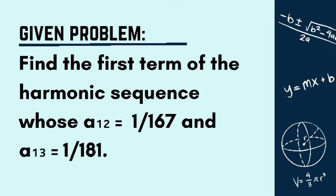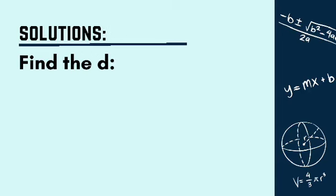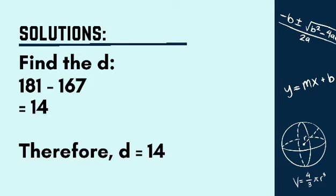Since we don't have a given value on d or common difference, we need to solve for d first. In order for us to get the d, we will just subtract the denominator of a₁₃ and a₁₂. So, 181 minus 167 is equal to 14. Therefore, our d is equal to 14.